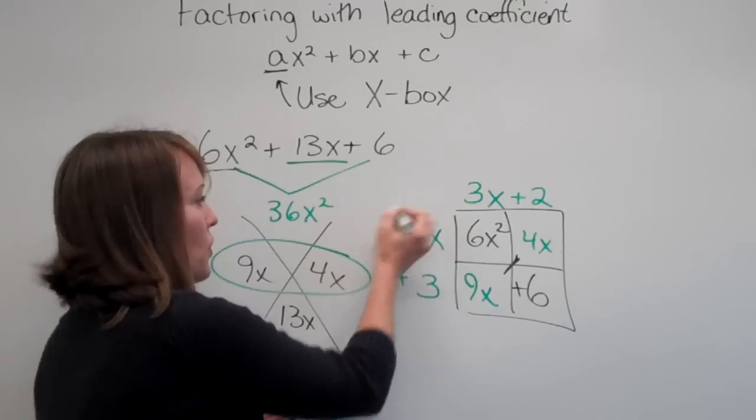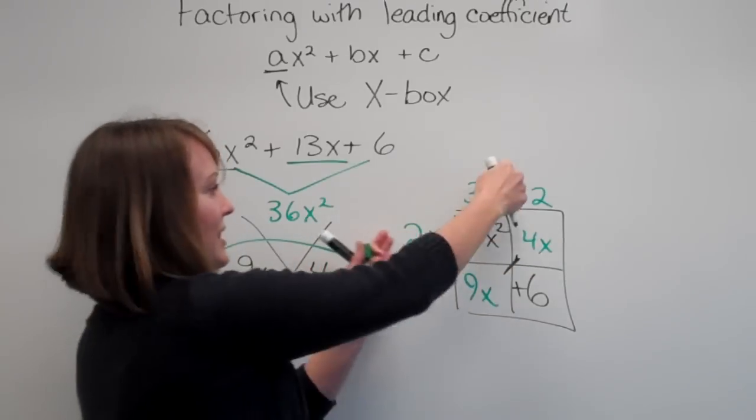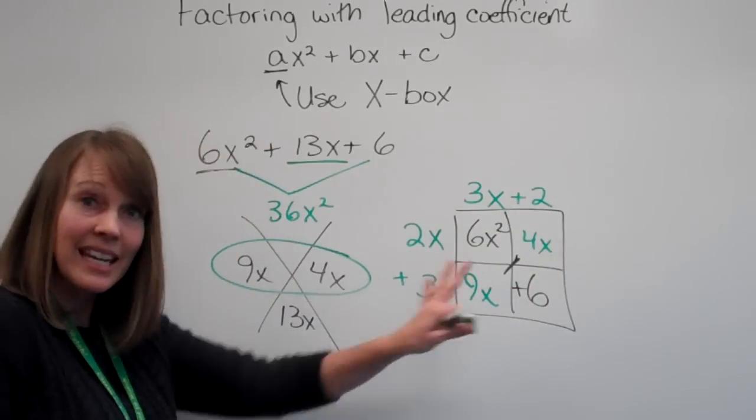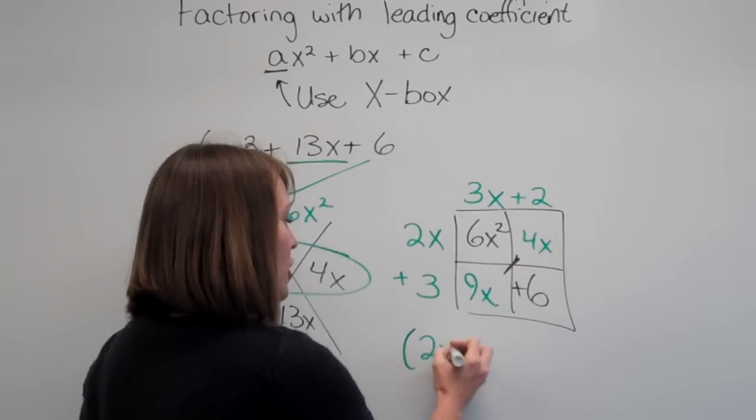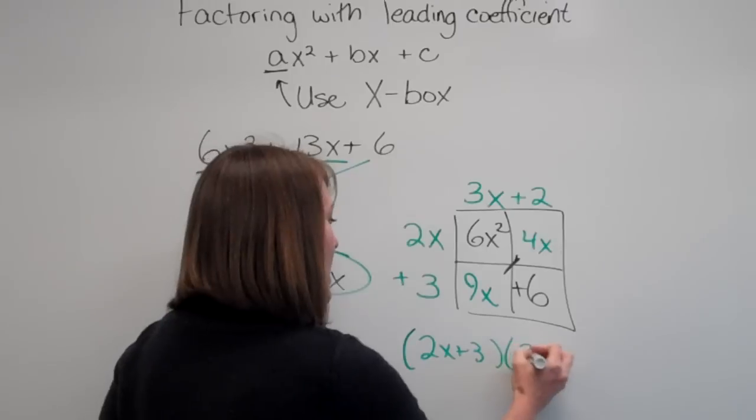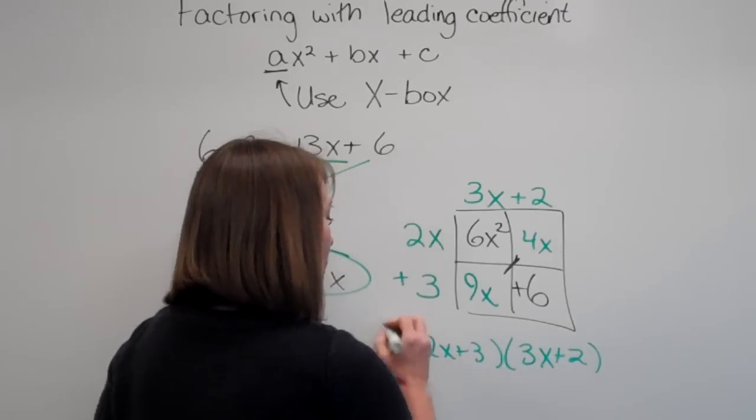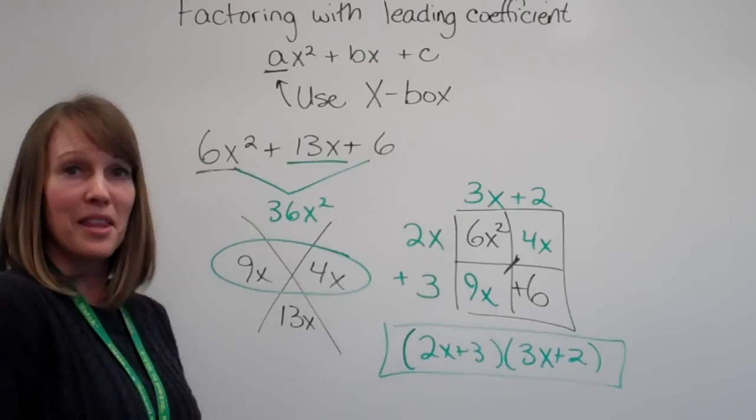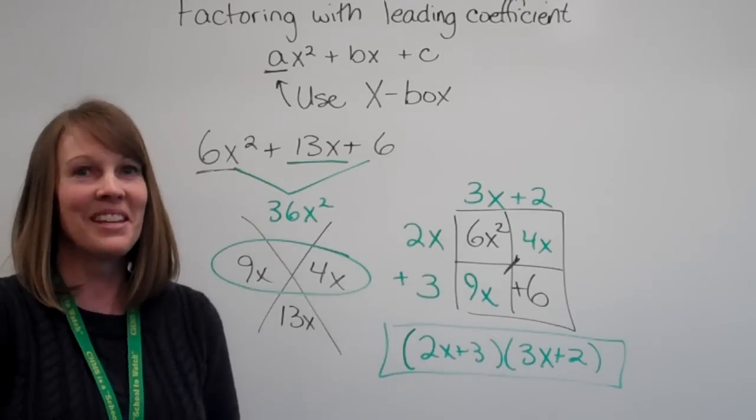So that means this is what we multiply together. Right? We can see that this works. These are the things that we multiply together to get our area. So that means our factors are 2x plus 3 times 3x plus 2. This is what we multiply together to get what we started with. And remember, you know you love Mel.